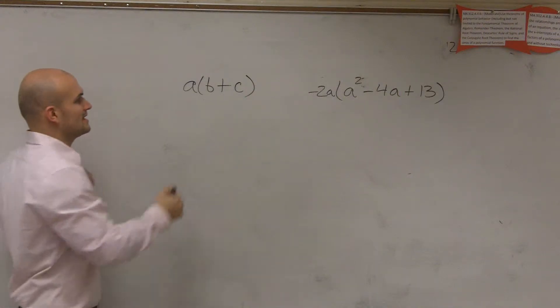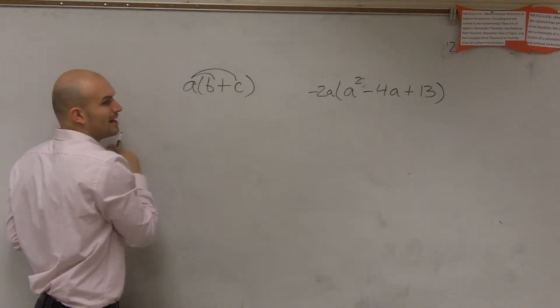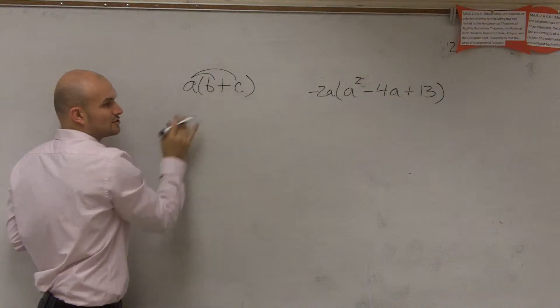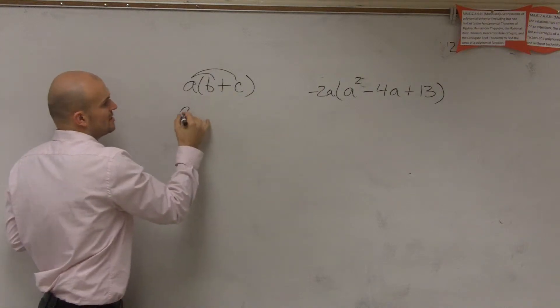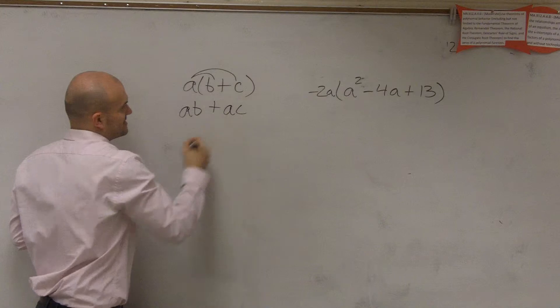So A times B plus C means you've got to multiply every term on the outside to every single term on the inside of your parentheses. So therefore, you have AB plus AC.